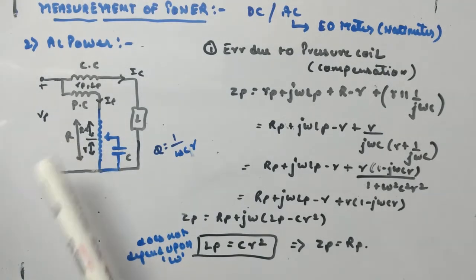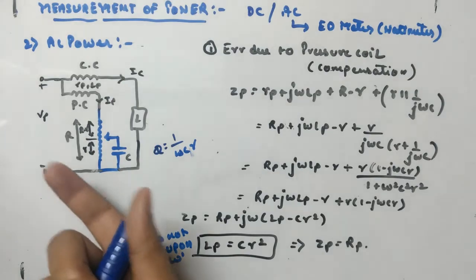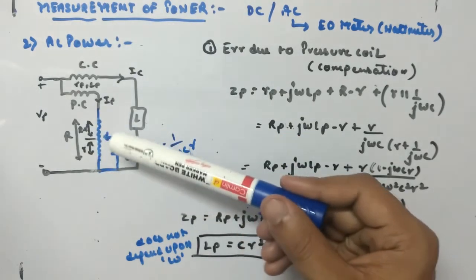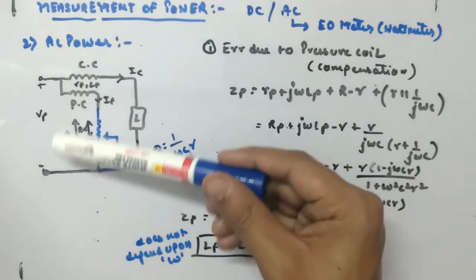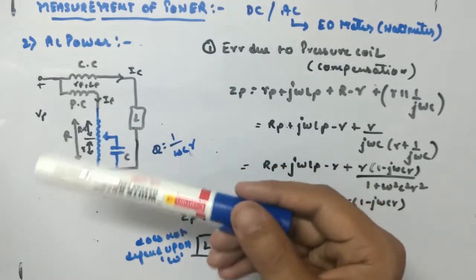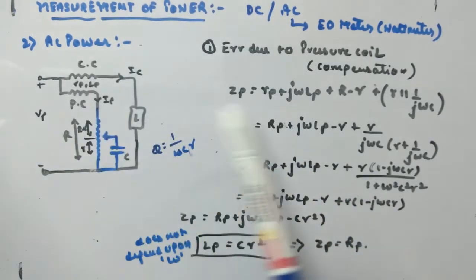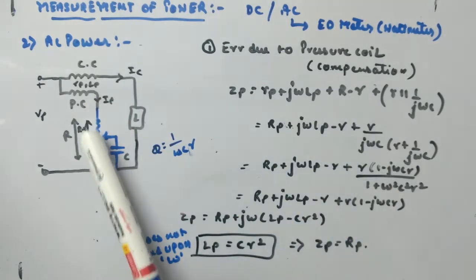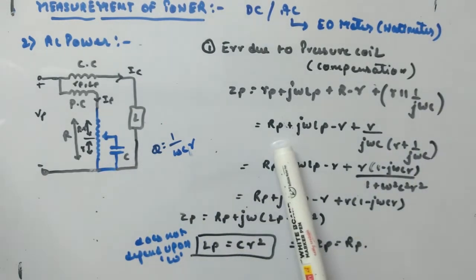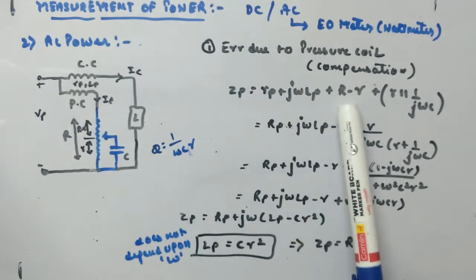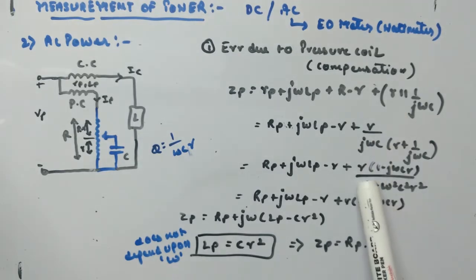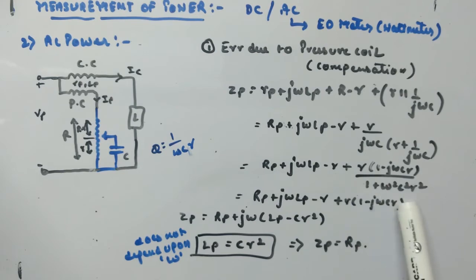In the better arrangement, the big resistance R is made like a potentiometer. The capacitor is connected across a small part r of the big resistance R, and the remaining resistance is R minus r. So Zp equals rp plus jωLp plus (R minus r) in series with the parallel combination of small r and C, i.e., r parallel with 1/(jωC). Simplifying: Rp + jωLp + r·(1 − jωCr) / (1 + ω²C²r²).